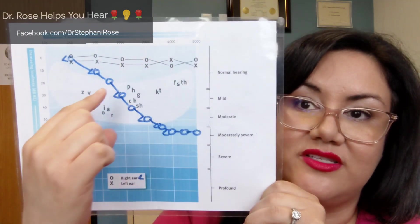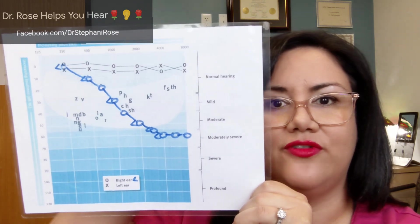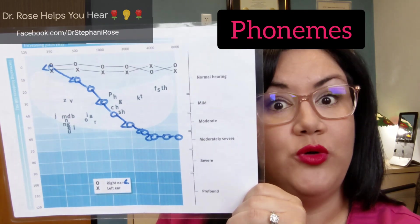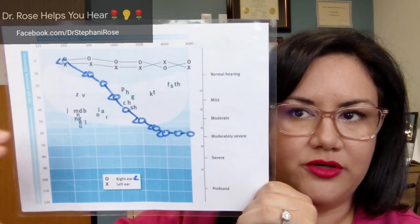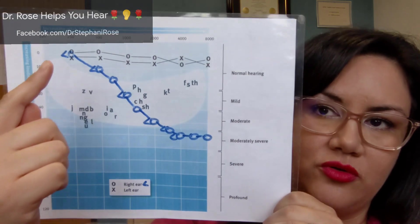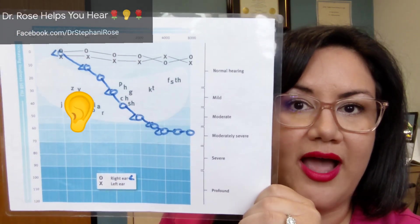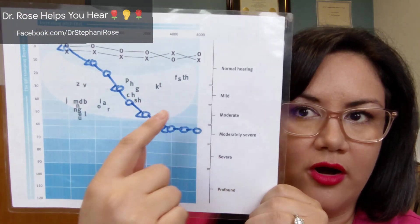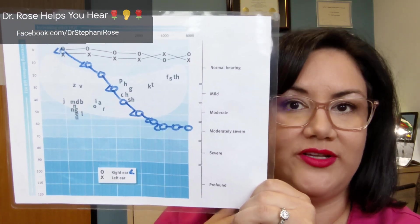On here you see we have the speech banana. These are the average sounds of speech — so when someone's talking at an average conversation level, where these letters, or really speech sounds or phonemes as they're called, wind up on the audiogram on average according to the volume and frequency of that given speech sound. Everything below this line, the person with high frequency hearing loss hears just fine with their natural hearing. The portions of speech that are missing are the high frequency sounds that really have no voicing.